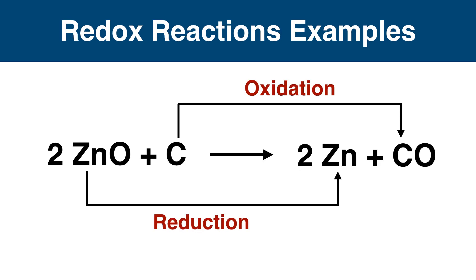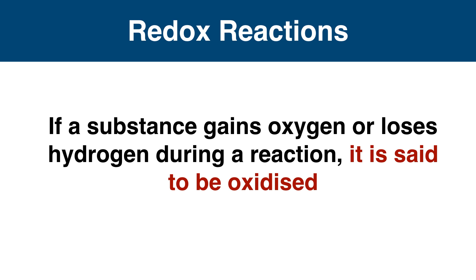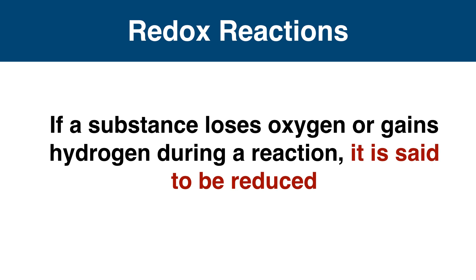Some redox reactions are: zinc oxide is reduced to form zinc and carbon is oxidized to form carbon monoxide. Manganese oxide loses its oxygen and is reduced to manganese chloride. Hydrochloric acid loses its hydrogen and is oxidized to chlorine gas. From these examples, we can conclude: if a reactant gains oxygen or loses hydrogen, it is an oxidation reaction. If a reactant loses oxygen or gains hydrogen, it is a reduction reaction.